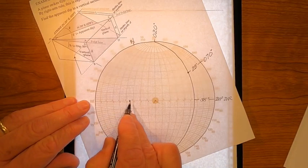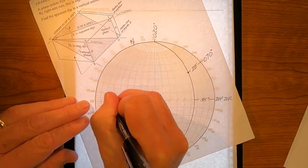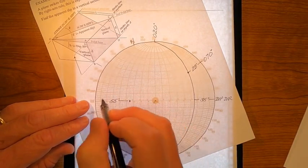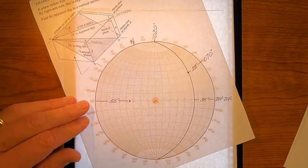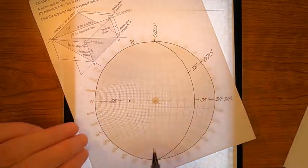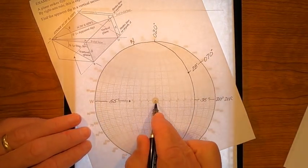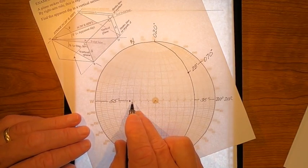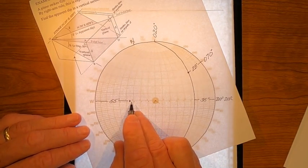10, 20, 30, 40, 50, 55. This angle is the 55 degree plunge of the pole to that plane. But we accomplished it by counting 35 degrees outward from the center. And I just find that to be a simpler way to do it.